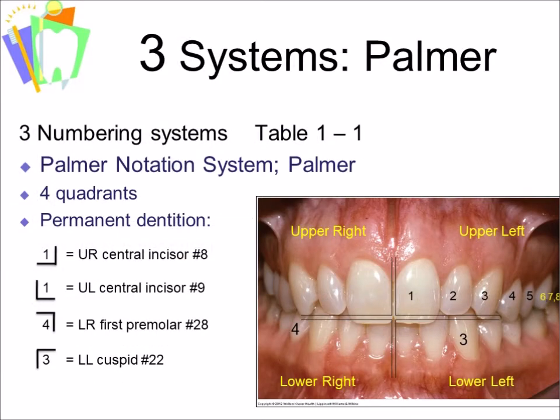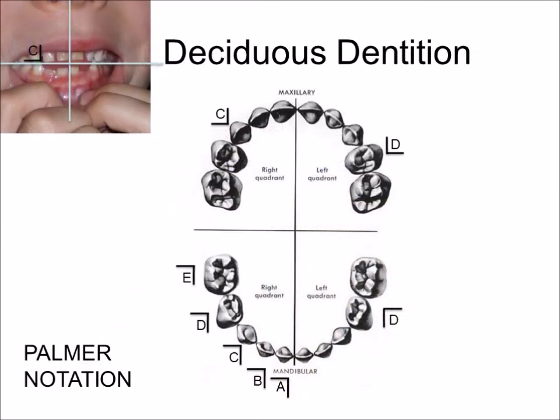This slide shows examples of how we would notate tooth number 8, tooth number 9, tooth number 28, and tooth number 22 using the Palmer Notation. The deciduous dentition in the Palmer Notation System is very similar to the permanent dentition; however, we use capital letters A through E to designate which tooth we're referring to. In Palmer, you designate the quadrant by the direction the L is facing and the tooth by A through E.